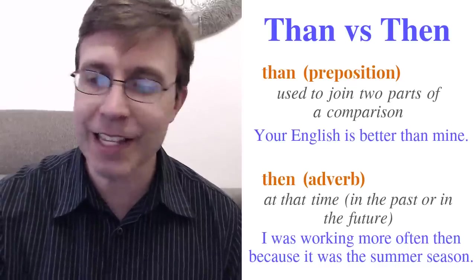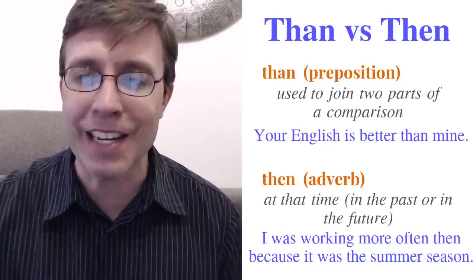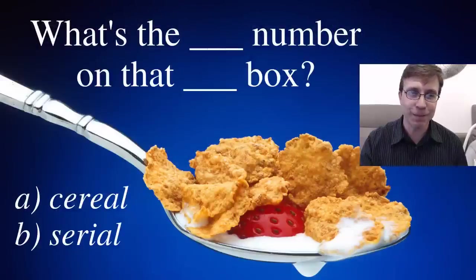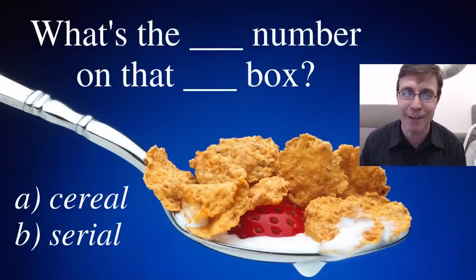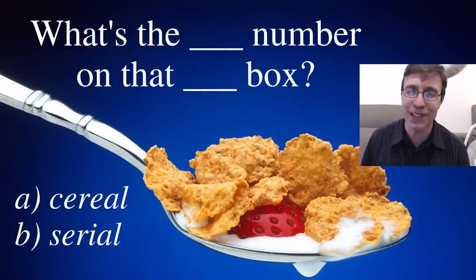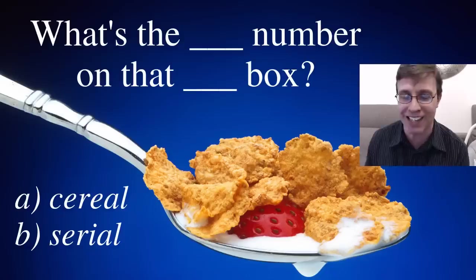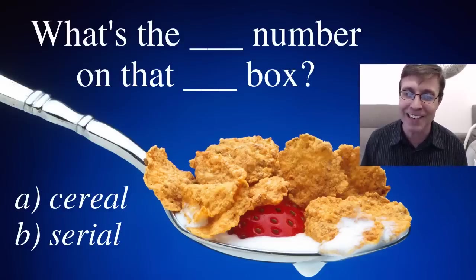Next one — I think this might be a little easier for you, but it's a two-word question. These are homonyms: cereal and serial. The question is: 'What's the ___ number on that ___ box?' You're going to use both words — which word goes in which place?